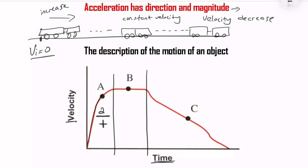At point B, we have a straight horizontal line on the velocity graph, which means constant velocity. If there is no change in velocity, acceleration becomes zero. Just imagine driving at constant velocity — no change in velocity means no acceleration. At point C, the velocity graph starts decreasing — there is a change in velocity, but the change is a decrease.